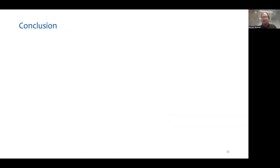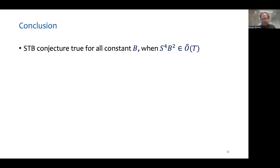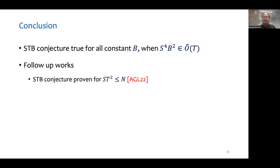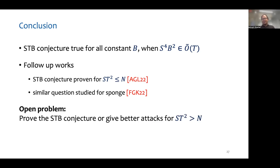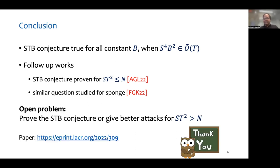In conclusion, we proved the STB conjecture for all constant values of b and for some other parameter ranges by characterizing the structure of collisions in the Merkle-Damgård construction. In a follow-up work by Akshima et al., one of our results was improved, resulting in a proof of the STB conjecture when st² ≤ n. In a different follow-up work by us along with Cody Freitag, the similar question of characterizing hardness of short sponge collisions was studied. The main open problem stemming from this work is proving the STB conjecture or coming up with better attacks for the regime st² > n. The full version of our paper is on ePrint. Thank you.